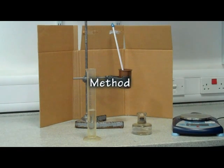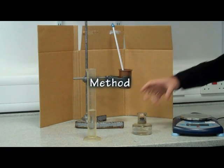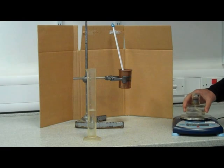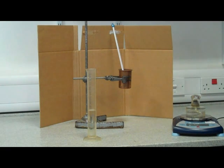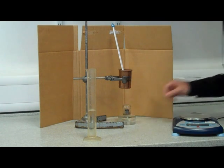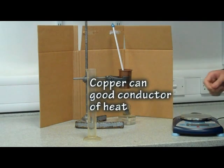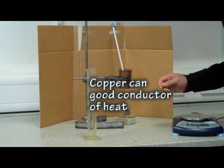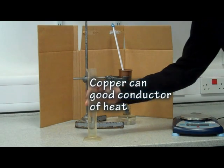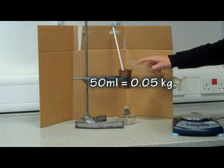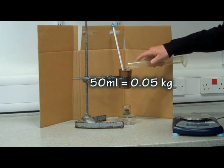We begin by weighing the ethanol with the lid on, then place it under the copper can. A copper can is used as it conducts heat. 50 centimeters cubed of water, which is equal to a mass of 0.05 kilograms, is added to the can.